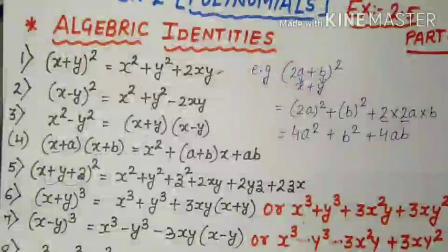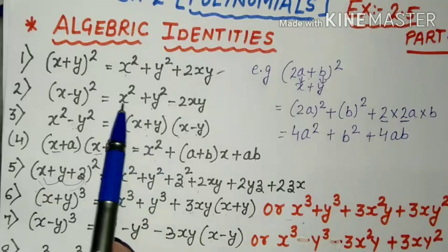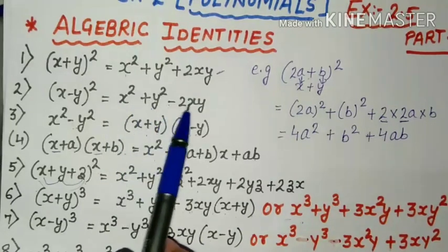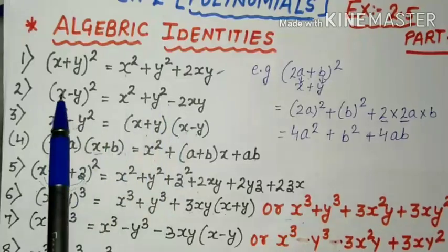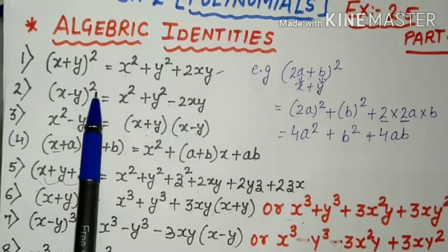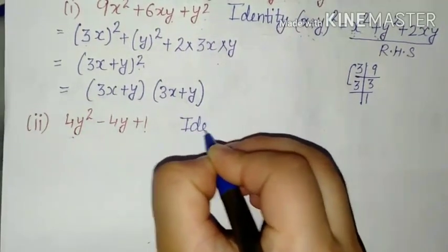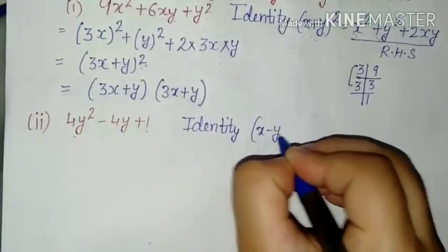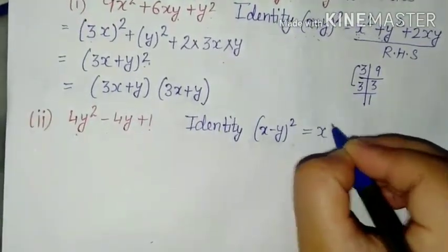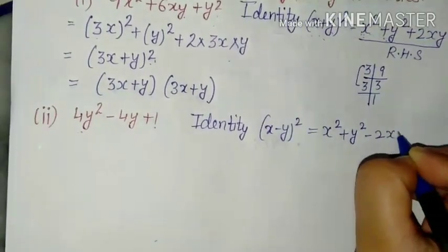Means isko solve karne ke liye hum kaun si identity use karenge? Second identity. Kyunki jo square hai — do terms ka square ho gaya. Square ke alawa jo term hai, woh ab isme minus ki aa rahi hai. So minus square to kya hai? x minus y whole square. So identity mention karti hai: x minus y whole square. That is equal to x² plus y² minus 2xy.